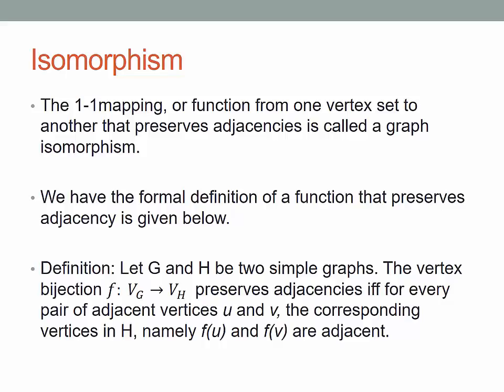The formal way to define this is to say that it preserves adjacency. So our definition of an isomorphism is a bijection from vertex set VG to the other vertex set VH that preserves adjacency, which means if U and V are adjacent in the original graph G, then their image under the bijection f(U) and f(V) should also be adjacent.